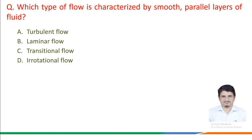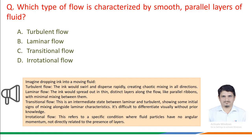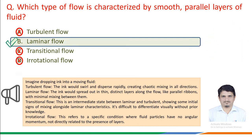Facts which will take us to the correct answer: imagine dropping ink into a moving fluid. In turbulent flow, the ink would swirl and disperse rapidly, creating chaotic mixing in all directions. In laminar flow, the ink would spread out in thin distinct layers along the flow, like parallel ribbons with minimal mixing. Transitional flow is an intermediate state between laminar and turbulent. Irrotational flow refers to a condition where fluid particles have no angular momentum, not directly related to layers. This leads to the correct answer: option B, laminar flow.